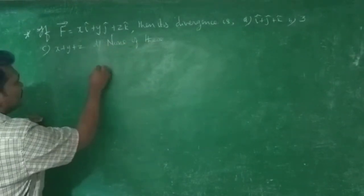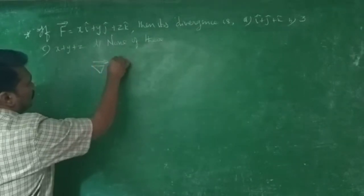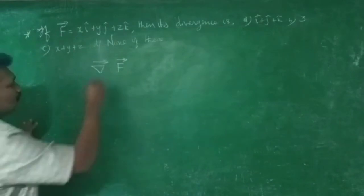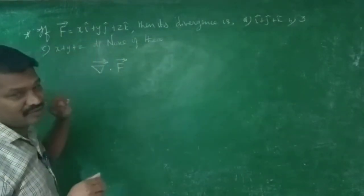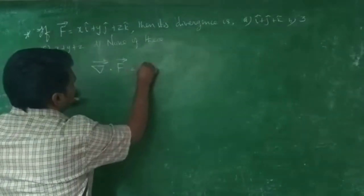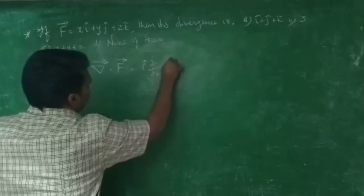Divergence of F is nothing but the del operator, so i-cap ∂/∂x plus j-cap ∂/∂y...